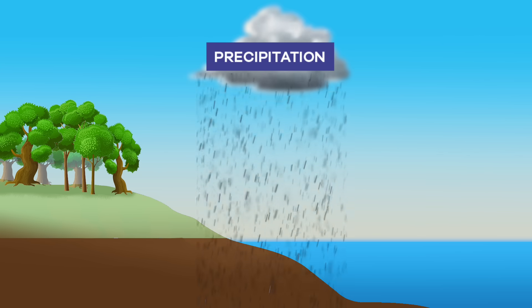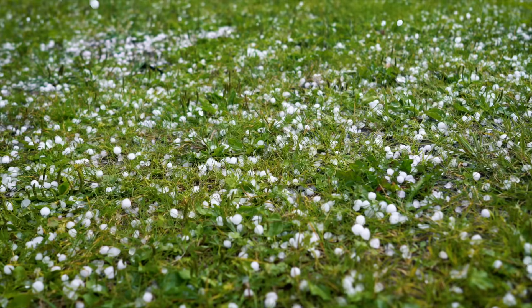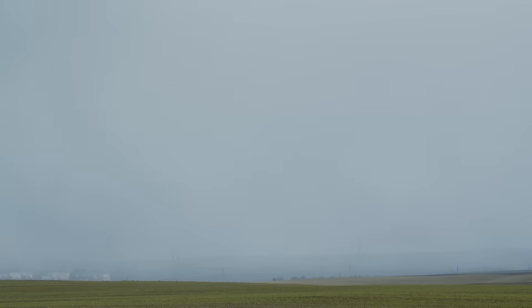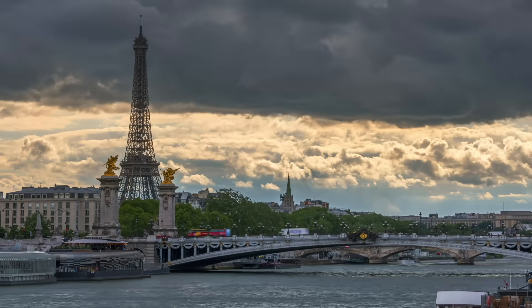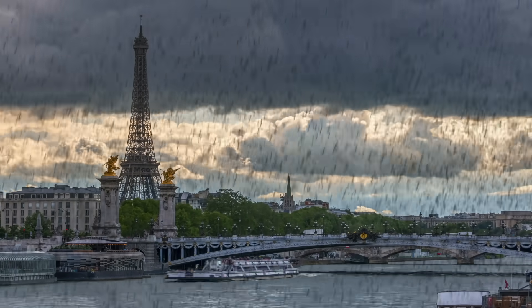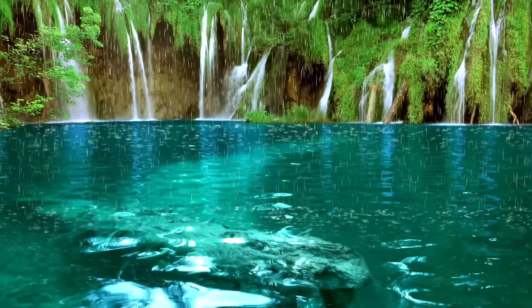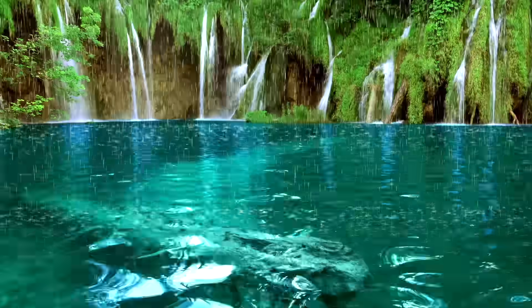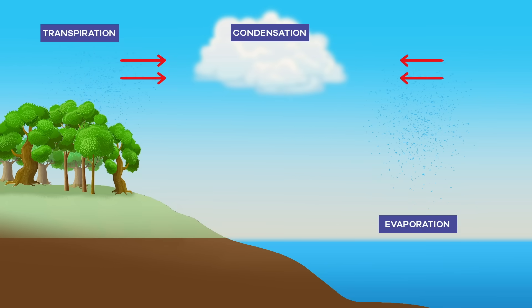Finally, precipitation. Precipitation is rain, snow, sleet, or hail that falls to the ground. It happens when the air can no longer hold the water that has been evaporated. As we mentioned before, when clouds get too heavy, it rains, and the evaporated water makes its way back down to the Earth. This precipitation will gather in bodies of water or underground, and the whole water cycle starts again.